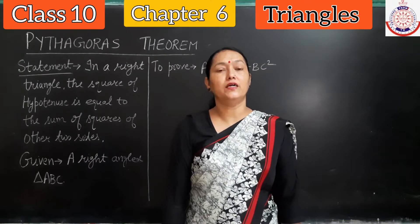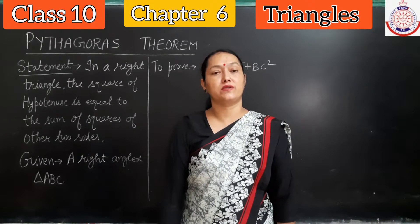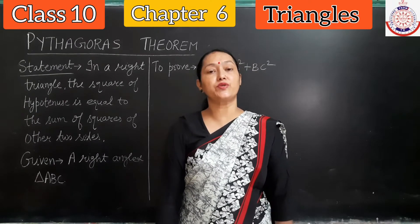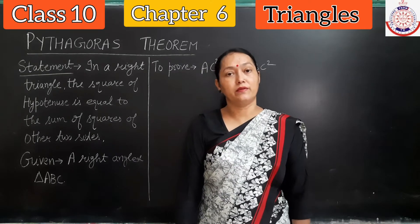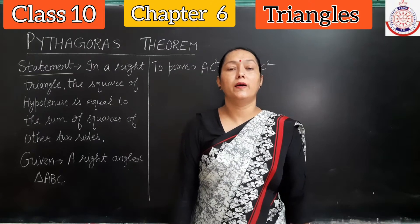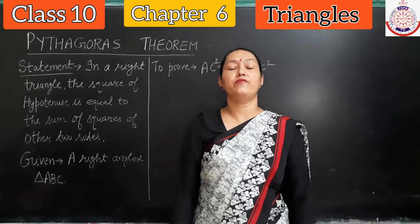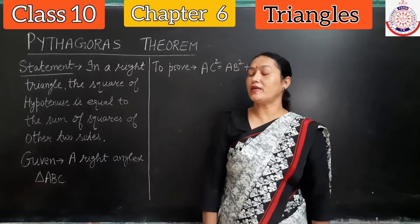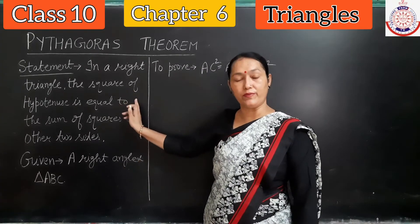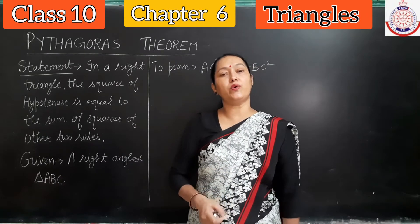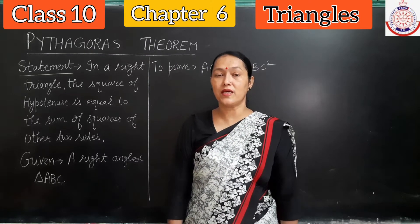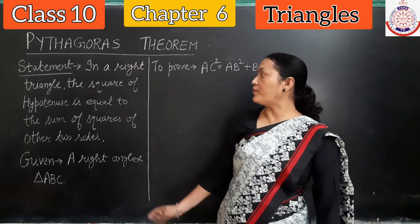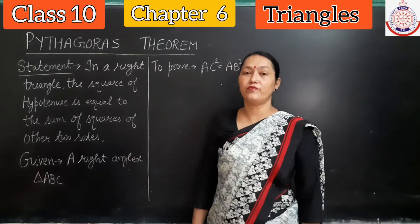Namaste students. The word Pythagoras we have heard in our junior classes and used this theorem in solving many questions. But in today's lecture we'll be doing its proof through similarity. You very well know that according to Pythagoras theorem, the square of the hypotenuse is equal to the sum of the squares of the other two sides: h² = p² + b². Let us see the proof of the same theorem with the help of similarity.